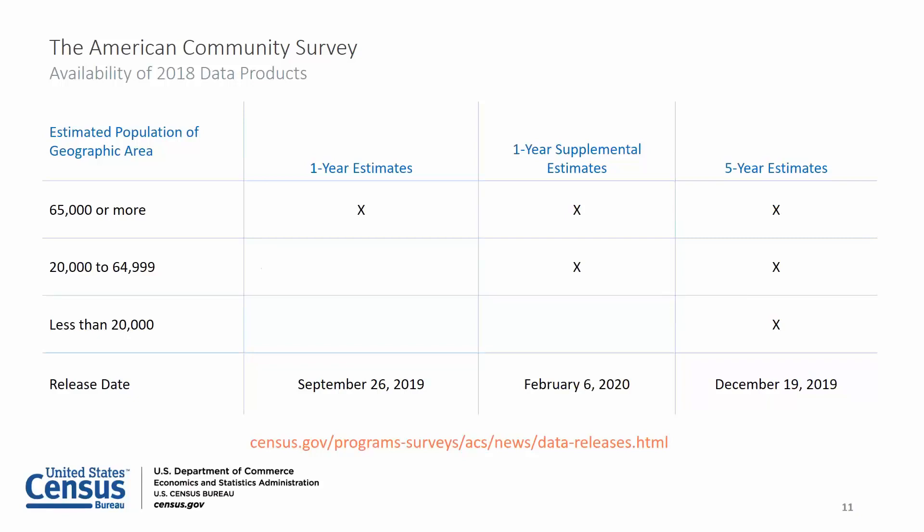ACS five-year estimates combine data collected over 60 months and are available for geographic areas of all sizes down to the census tract and block group level. The 2014 to 2018 ACS five-year estimates are planned to be released on December 19, 2019, with some remaining tables coming out on January 16, 2020. We also release one-year and five-year public use microdata samples, or PUMS files, for users who want to create custom tables, and variance replicate estimates for users who want to calculate margins of error.